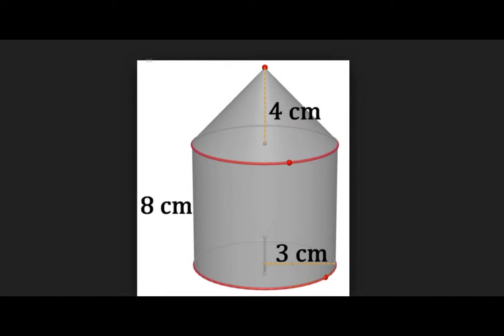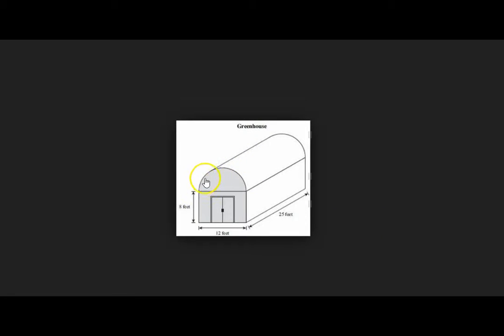This is a composite shape because I have a cylinder on the bottom here with a cone on top. Here's another composite shape. I've got a semi, almost a cylinder, right? It's half of a cylinder on top, and then I have a rectangular prism right below that.